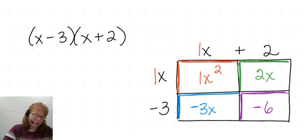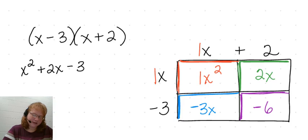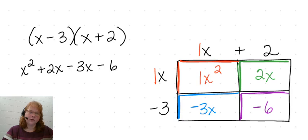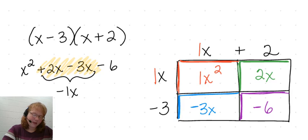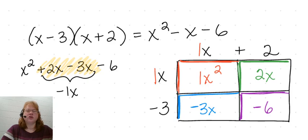The area model has helped us multiply, so we write our final answer by adding all the smaller areas up. I have x squared, plus 2x, minus 3x, and minus 6. We again have like terms: 2x minus 3x gives me negative 1x. So my final answer is x squared minus x minus 6. That's what we do when subtraction is involved. In this video, we've shown you how to use the area model to multiply two linear expressions together.